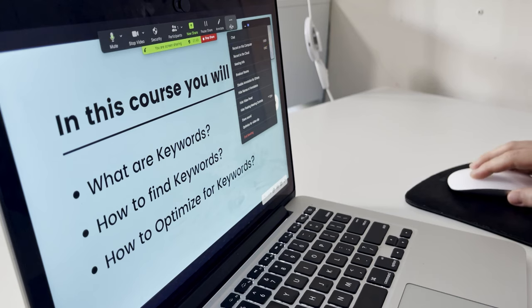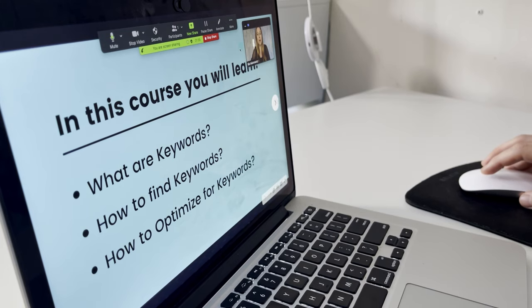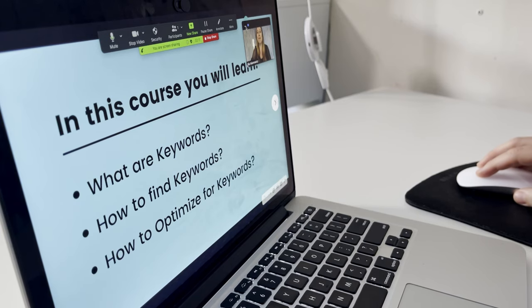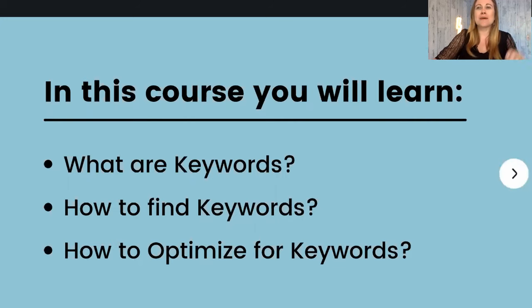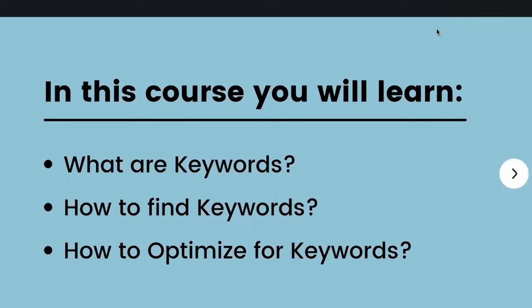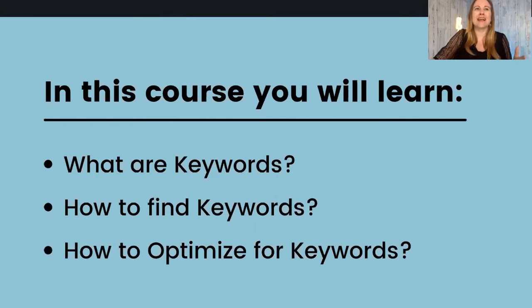I'm going to go here to more, and I can choose to record on this computer or record to cloud. So I'm going to record on this computer. As I'm giving my presentation, I can either show my face or I cannot, and I can change this throughout the time that I'm giving my presentation. I can do this by just minimizing this window. So as I minimize the window, I will no longer appear on the video. And then once I expand it, I will be back and I can talk about it. This is great if you want to be there for certain parts but don't need to be there for other parts.